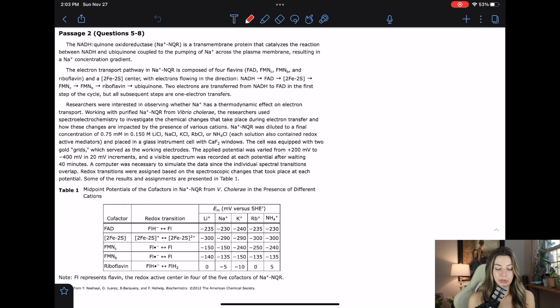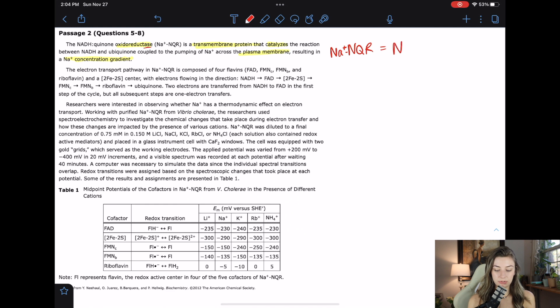So it starts out the NADH quinone oxidoreductase is a transmembrane protein that catalyzes the reaction between NADH and ubiquinone coupled to the pumping of sodium across the plasma membrane resulting in a sodium concentration gradient. Some people like to highlight their basic sciences. I know John really likes doing that so I'm going to try it out here. Transmembrane protein is definitely something you need to know.